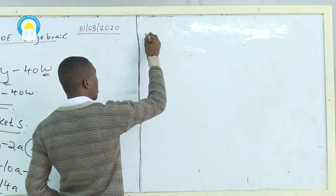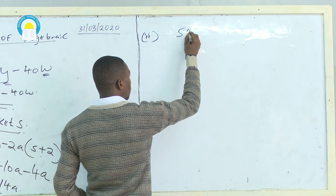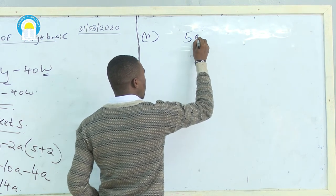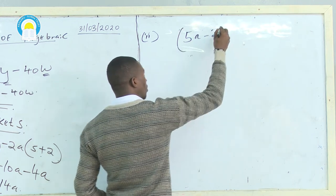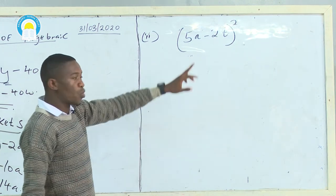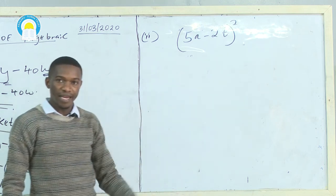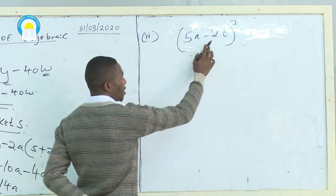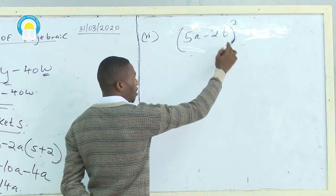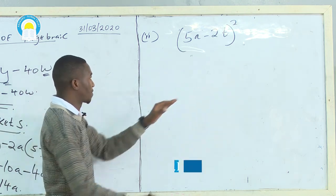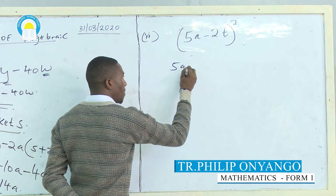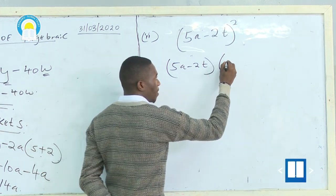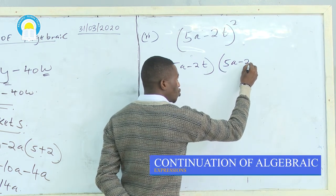We also have a question like (5A minus 2T) squared. In mathematics, squared means you repeat the same number two times. So because 5A minus 2T has been put in brackets with a square, we write it as (5A minus 2T)(5A minus 2T) — the same expression multiplied by itself.